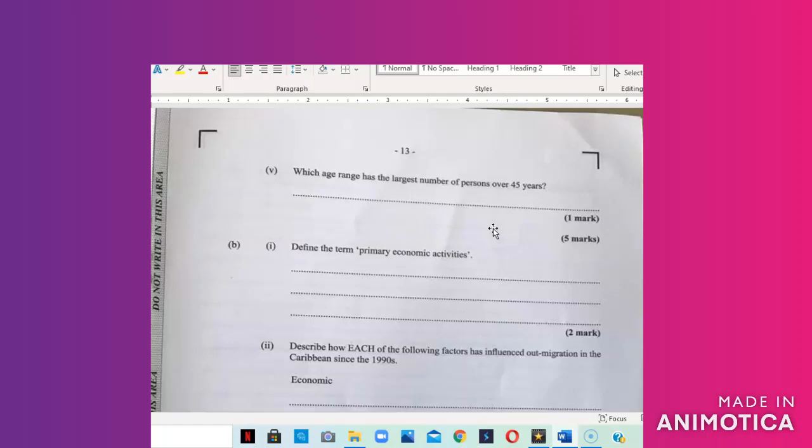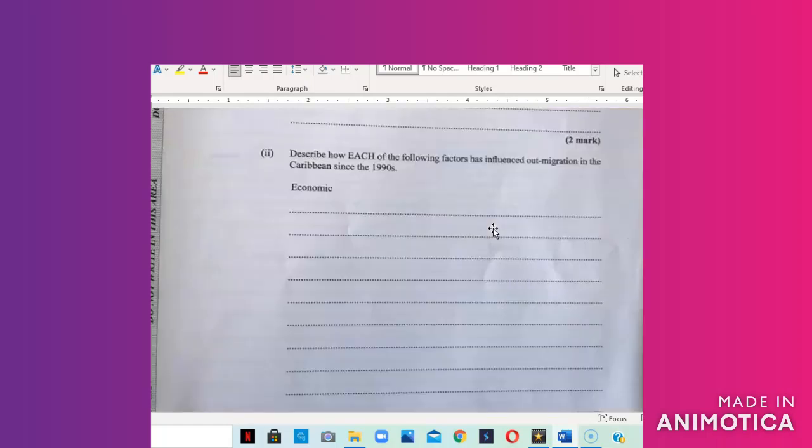Part B asks us to describe how each of the following factors has influenced out-migration in the Caribbean since the 1990s. Now we talk about out-migration, we're talking about the process of people moving out of an area in their country to move to another area within their country permanently. Economically, people migrate from one area to the next in search of employment opportunities and to basically follow their career path. For example, a teacher from Saint Elizabeth may relocate to Portland in order to work. So economically, you're moving because you're following your career path or you want to make money or you're moving to take on a job opportunity to better your standard of living.